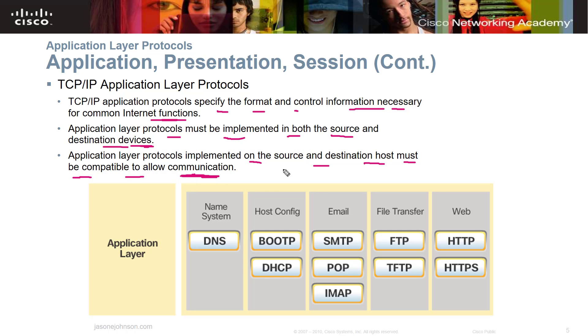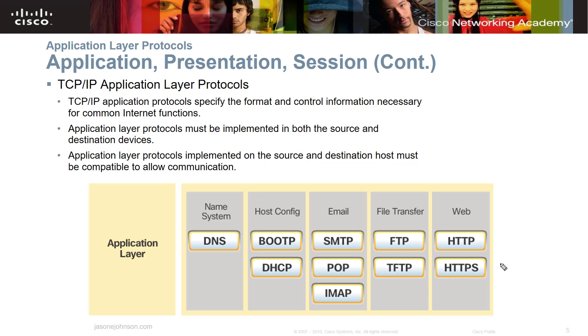Here's a graphical representation of the application layer. You have name system (DNS), host config, email, file transfer, and web protocols — including HTTP and HTTPS.